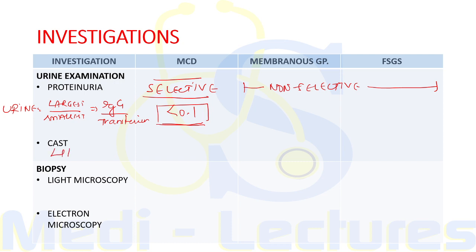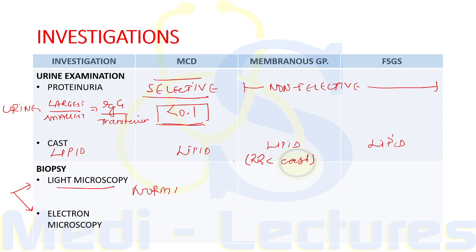Lipid casts are present in all cases. In some cases of membranous glomerulopathy there is microscopic hematuria, so sometimes there can be presence of RBC casts — although RBC cast is not a typical feature of nephrotic syndrome. On biopsy, light microscopy is absolutely normal in minimal change disease, which is why it is named minimal change disease. In membranous glomerulopathy, there is PAS-positive thickening of the glomerular basement membrane due to IgG deposition.